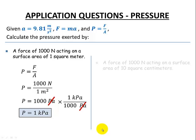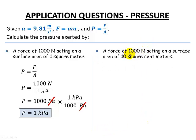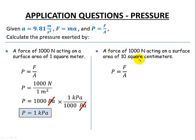Let's try another example. This time we still have a force of 1,000 newtons, but it's acting on a surface area of 10 square centimeters. We should stop and think: our pressure formula requires force in newtons — we have newtons, so that's fine — but area must be in meters squared, and we have square centimeters. So we'll have to convert.